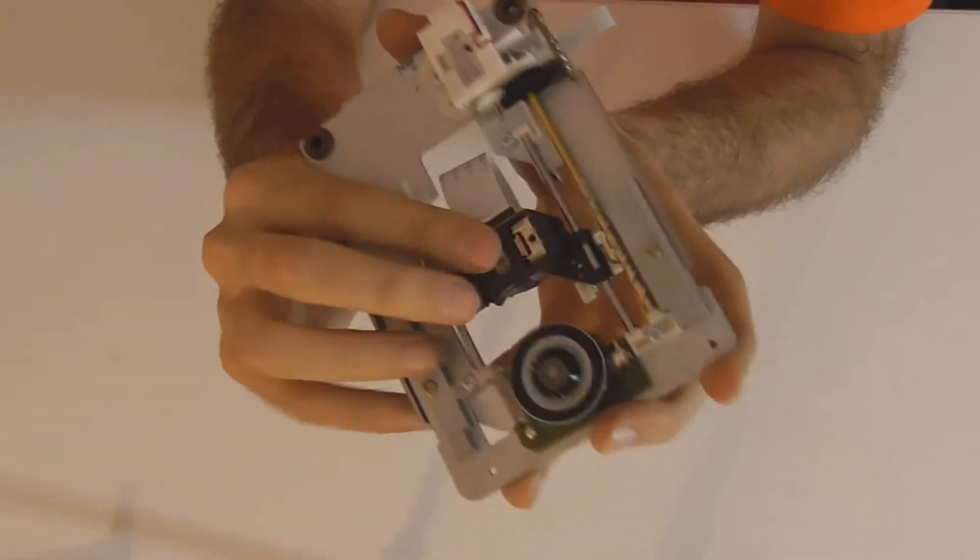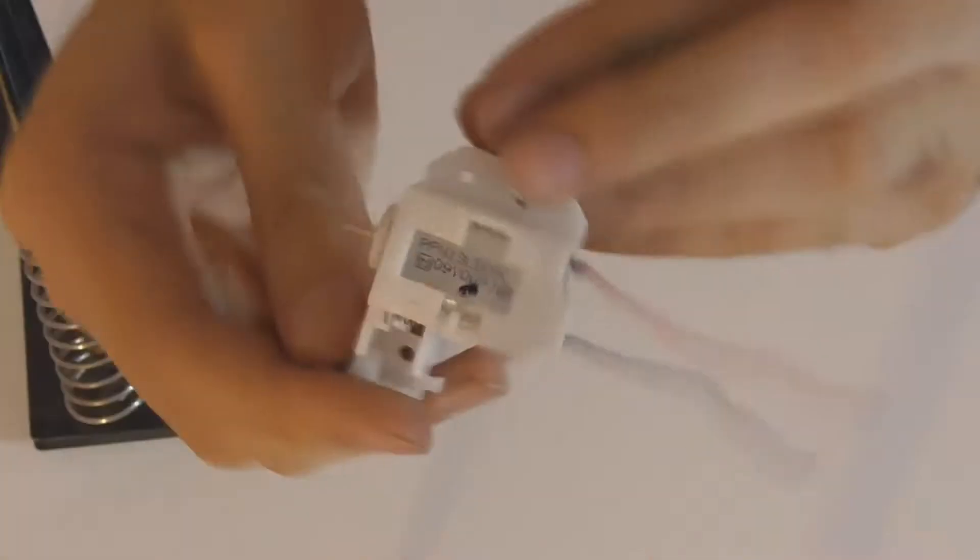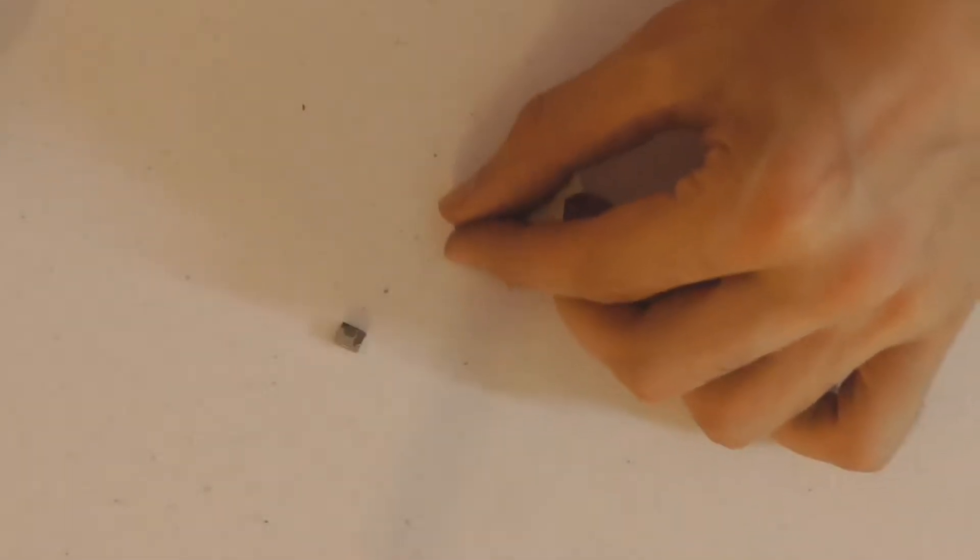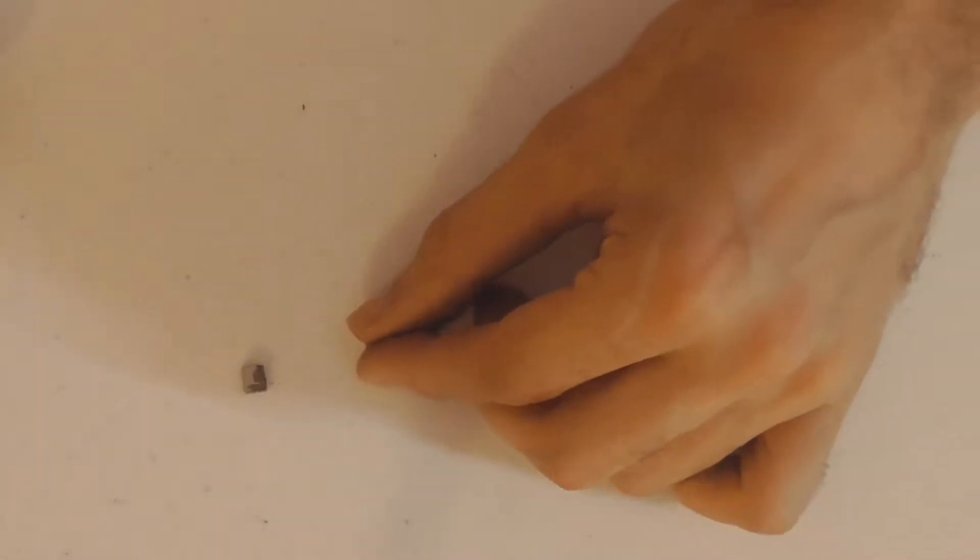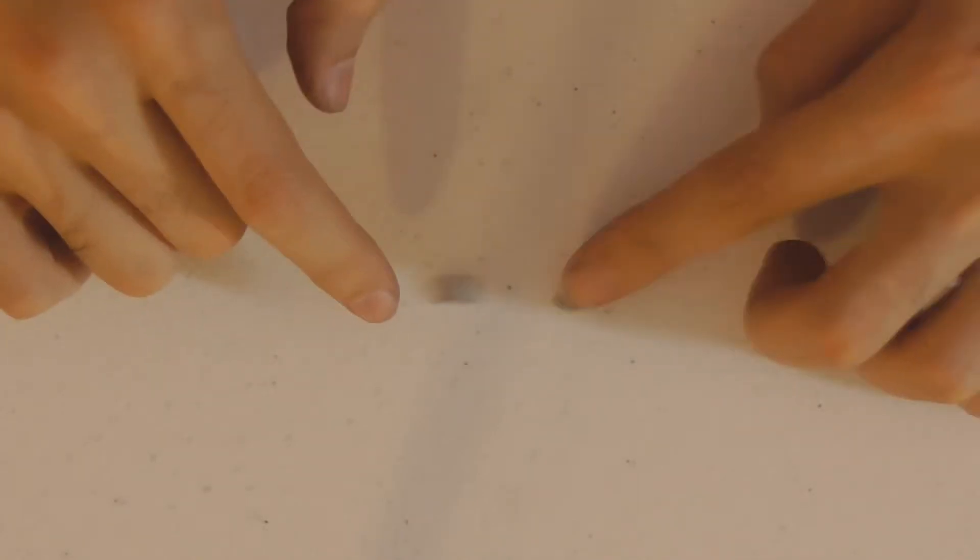There are a lot of interesting things that you can salvage from a CD-ROM drive: motors, LEDs, magnets such as these strong ones that I'm playing with right here. In this video I'm going to be showing you how to take apart one such CD-ROM drive and what cool and useful components to look for. Let's begin.